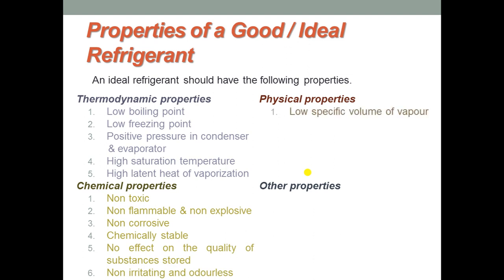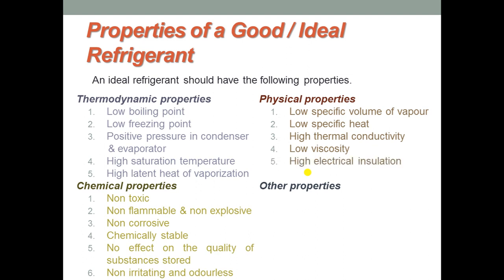The physical properties are: first, low specific volume of vapor so that it occupies minimum space, thereby keeping the compressor capacity to a minimum and pipe diameter relatively small. Low specific heat is the second physical property. The third is high thermal conductivity, so that heat transfer takes place easily. Low viscosity for easy circulation of the refrigerant. And high electrical insulation.